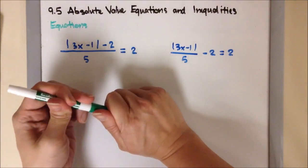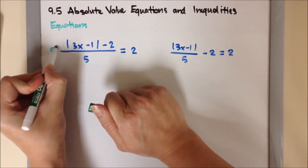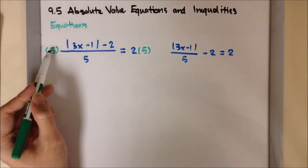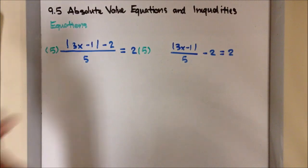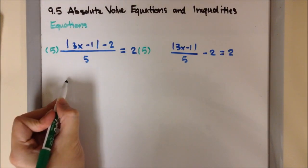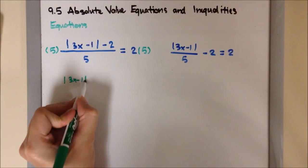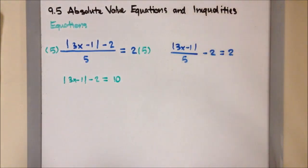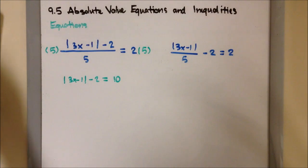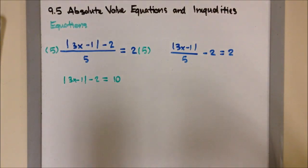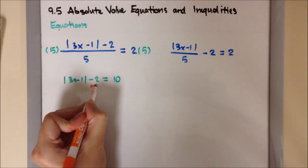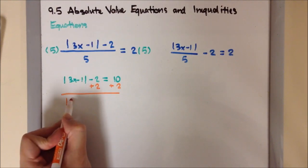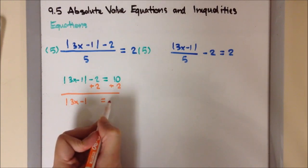So I'm going to multiply both sides by the denominator, which is 5. When the 5s divide each other they become 1, leaving just the numerator: the absolute value of 3x minus 1, minus 2, equal to 2 times 5, which is 10. From there, I'm going to cancel out the minus 2 by adding 2 on both sides, giving the absolute value of 3x minus 1 equals 10 plus 2, which is 12.